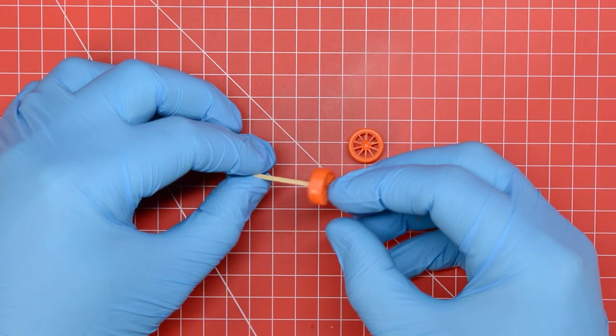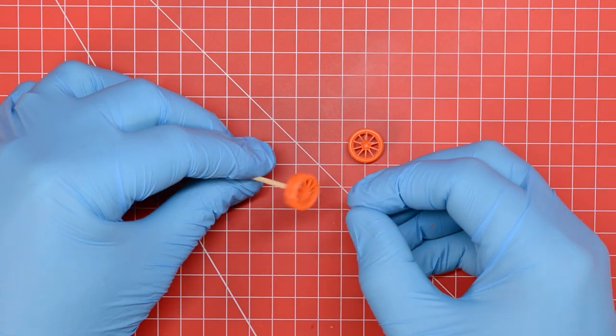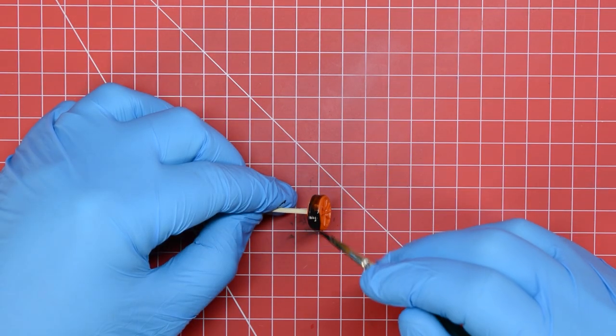Once these have been glued together we mounted our wheels on some cocktail sticks to make it easier to handle them while we're painting.